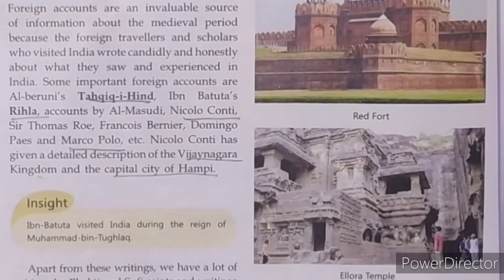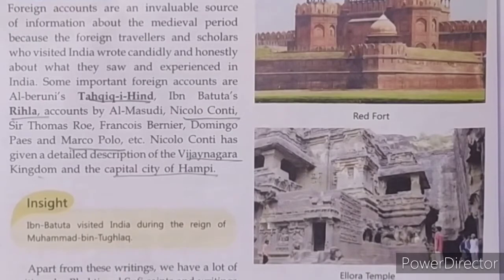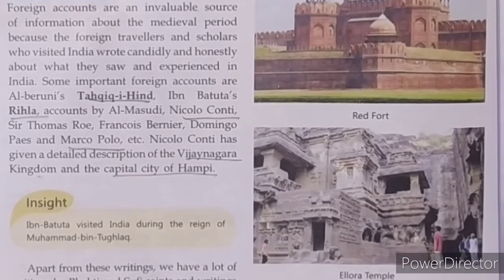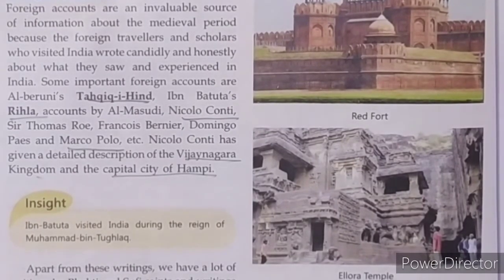Some important foreign accounts include Al-Biruni's Tahqiq-i-Hind, Ibn Battuta's Rihala, and works by Niccolò Conti, Thomas Roe, Domenico Pires, and Marco Polo. Niccolò Conti gave a detailed description of the Vijayanagara kingdom and the capital city of Hampi.